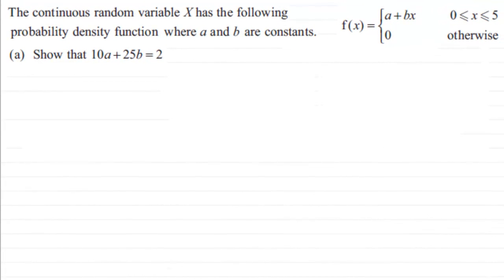Hi. Now here we have an example based around a continuous random variable X which has the following probability density function where A and B are constants. And what we've got to do is show that 10A plus 25B equals 2.